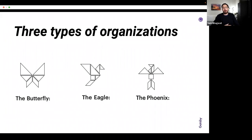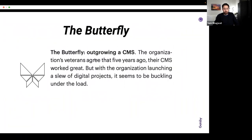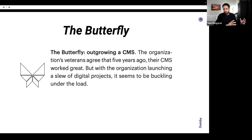As we've talked to a number of organizations, we found they really fell into three main categories: the Butterfly, the Eagle, and the Phoenix. We'll walk through each one. The Butterfly is an organization going through a gradual transformation process — think of the caterpillar molting into a butterfly. This kind of organization had a CMS stack that worked pretty well a while ago, but as they've launched more digital projects it isn't working as well, so they're moving to the Jamstack or modular web for agility.